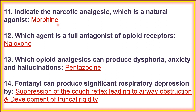Twelfth, which agent is a full antagonist of the opioid receptor? The full antagonist of the opioid receptor is naloxone. Thirteenth, which opioid analgesic can produce dysphoria, anxiety, and hallucination? That is pentazocin. Pentazocin is a drug which produces dysphoria, anxiety, and hallucination as side effects.